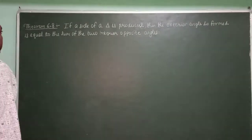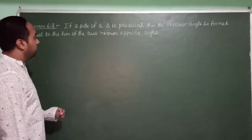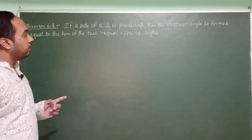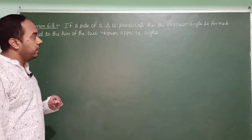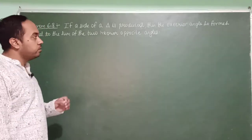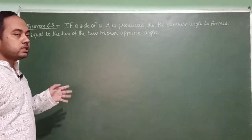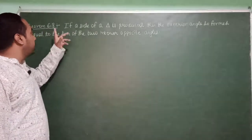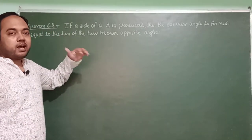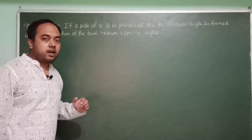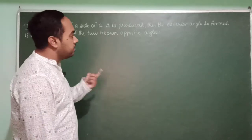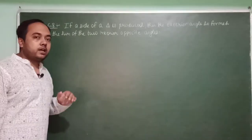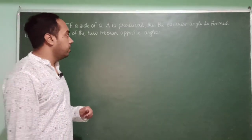Theorem 6.8: if a side of a triangle is produced, then the exterior angle so formed is equal to the sum of the two interior opposite angles. This theorem is also called the exterior angle sum property of a triangle.